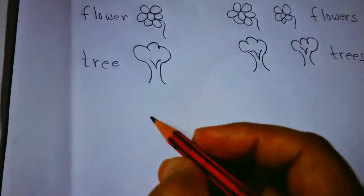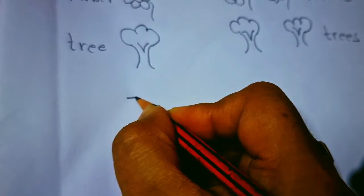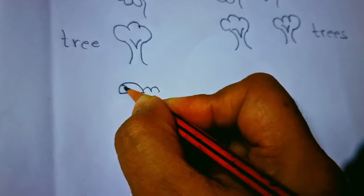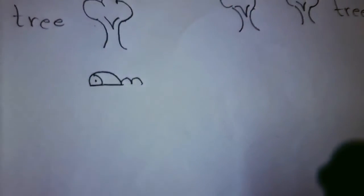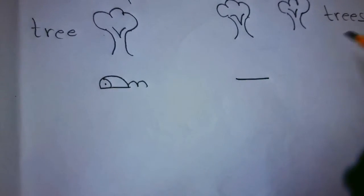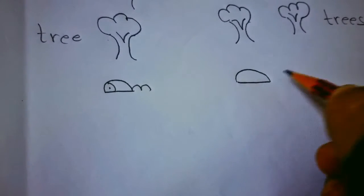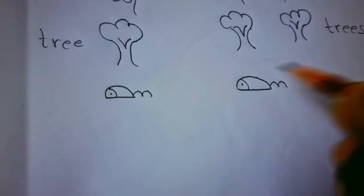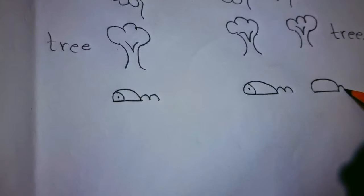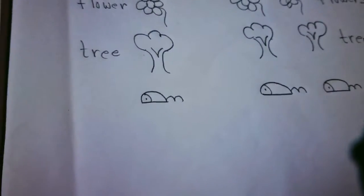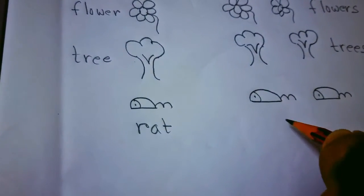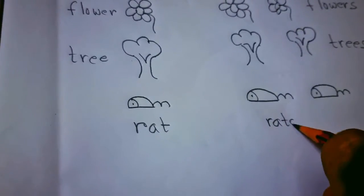Now the next picture is rat. Very easy, see. I don't know, it's looking like rat or not, but this is rat. Okay, see. One rat. Now here many rats. More than one is many. So you can write here also: R-A-T rat, R-A-T-S rats.